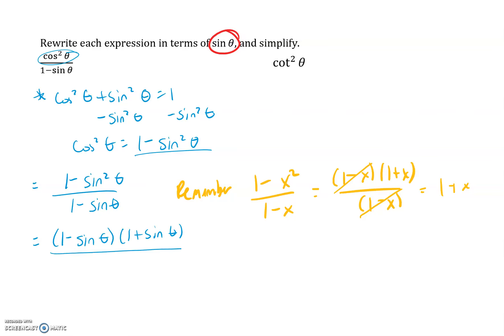We factor one minus sine squared theta as a difference of two squares: one minus sine theta times one plus sine theta, placed over one minus sine theta. The one minus sine theta factors cancel, and we're left with one plus sine theta. So even though one minus sine squared theta over one minus sine theta is already in terms of sine, we can simplify even further by factoring. Always double-check and simplify all the way to the end.